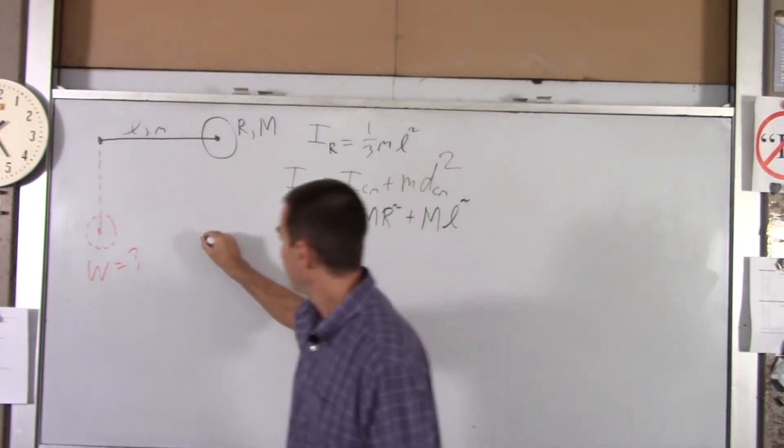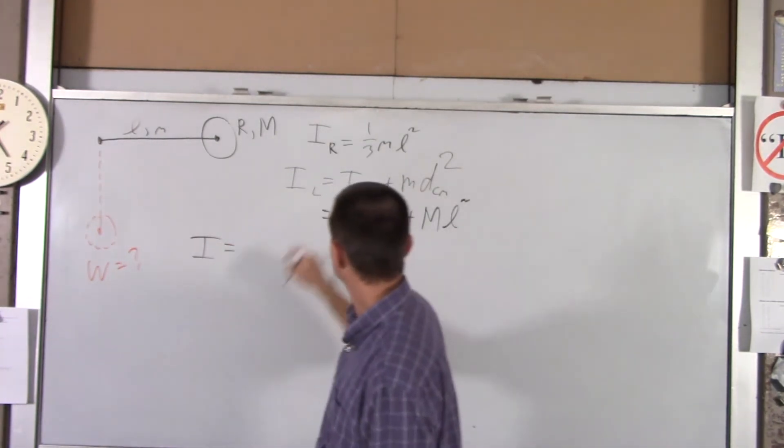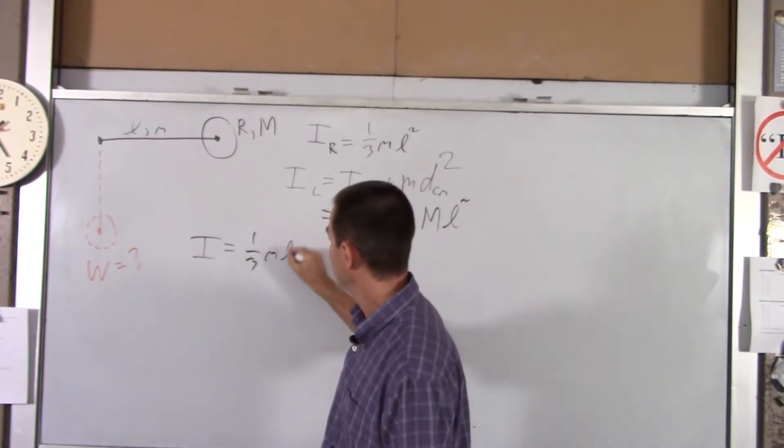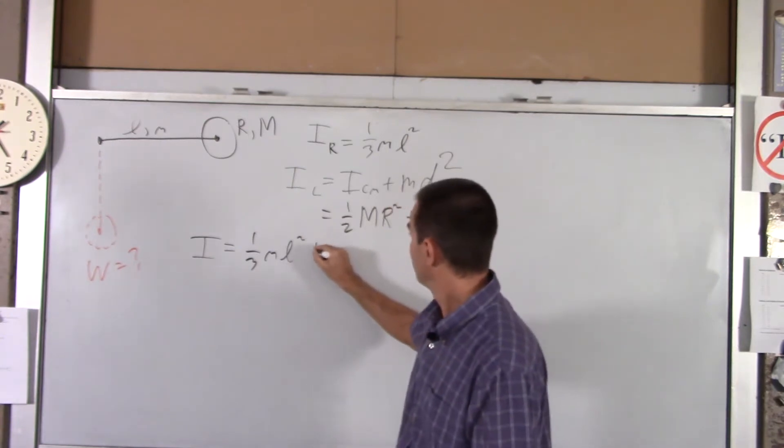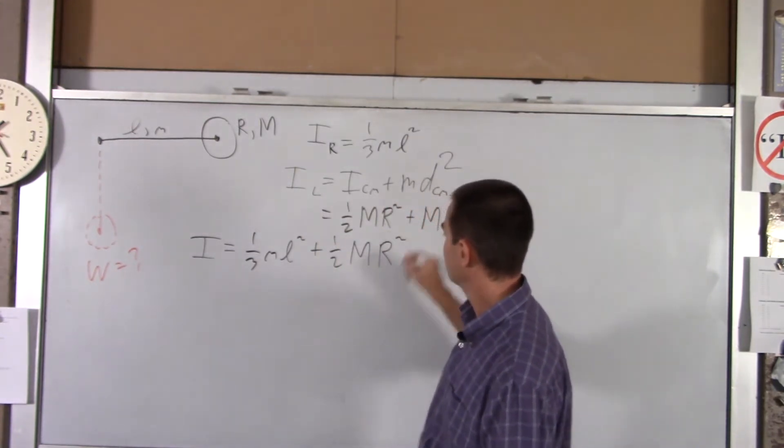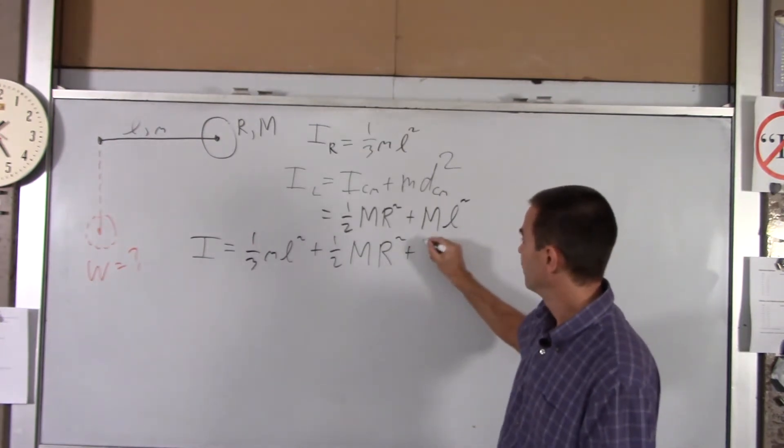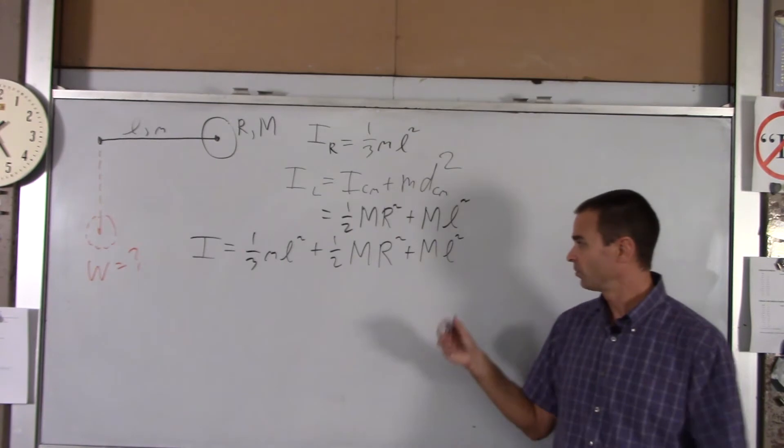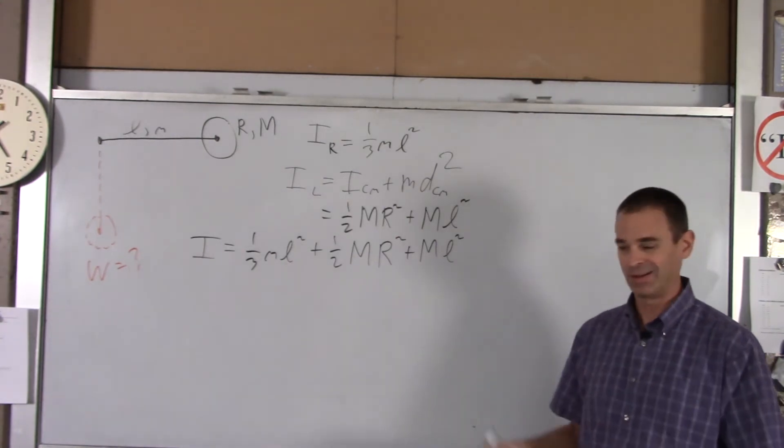So our total moment of inertia of our system is that plus all that. You got a third little m L squared plus a half big M r squared plus big M L squared. And unfortunately, there's no like term, so we can't simplify that at all. It's just it.